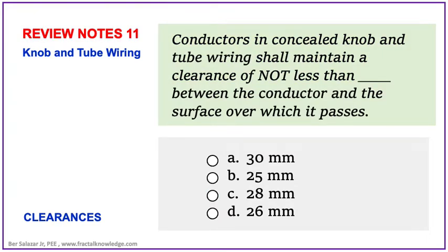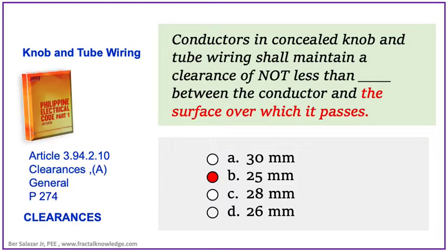Another possible problem asks: what is the clearance between conductors and the surface over which it passes? The answer can be found in 2017 PEC Article 3.94, page 274, specifically section 3.94.2.10 Clearances. The keyword here is 'between conductors and surface over which it passes.' The answer is 25 mm — that's letter B. Be careful because the numbers are close; if 25 mm is not in the choices, the possible answer is 26 mm. The exact value is 25 mm or 1 inch.